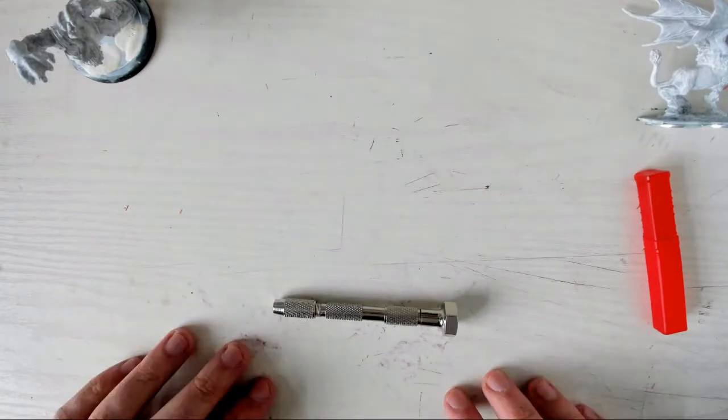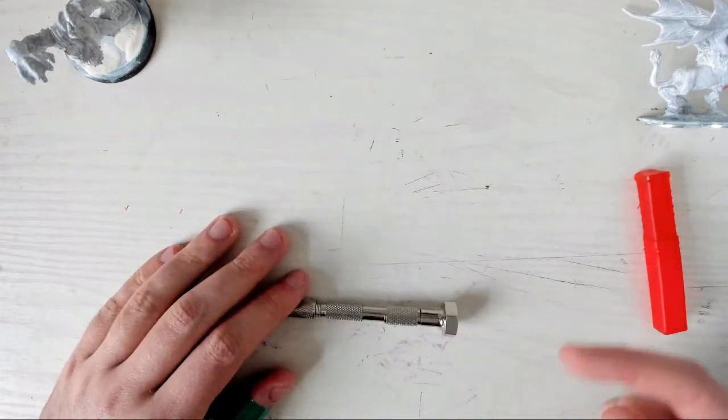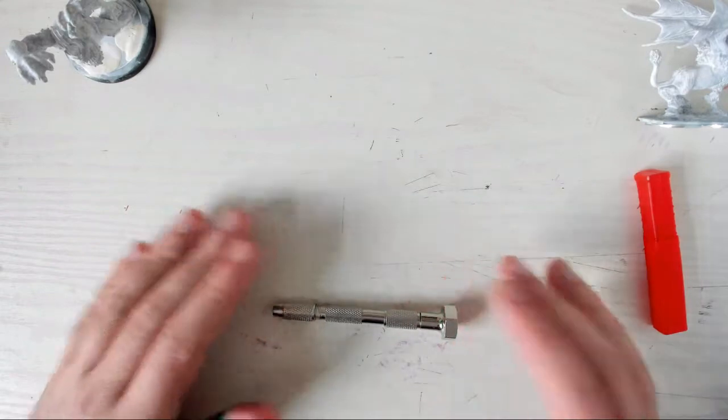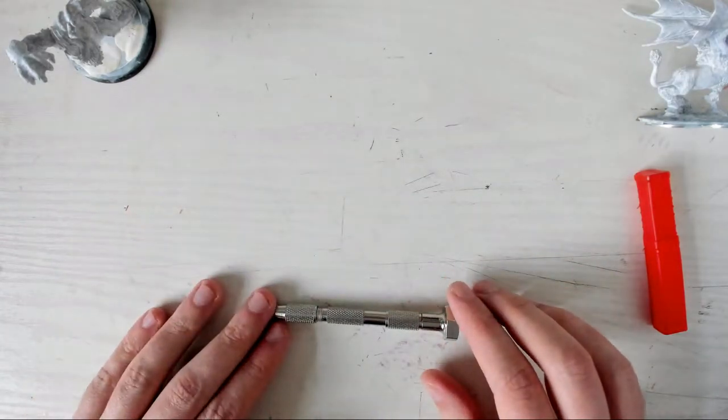There's the Archimedes drill, which has a spring you push down, and that turns the head, making it a bit easier to use one-handed. You can also get fixed bit pinvices and double-ended ones, but they're pretty rubbish, so I wouldn't bother with either of those.